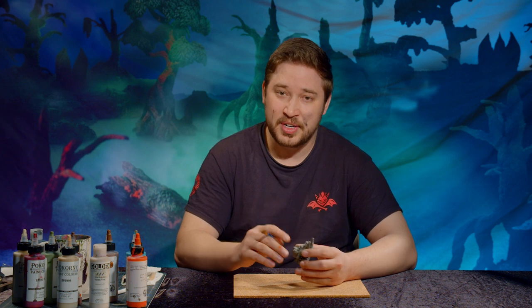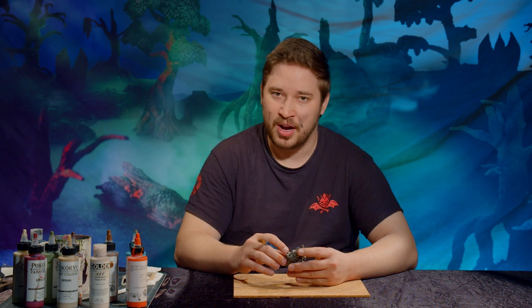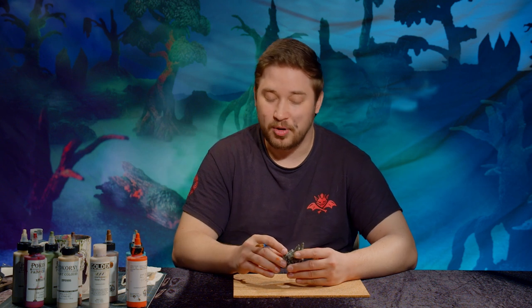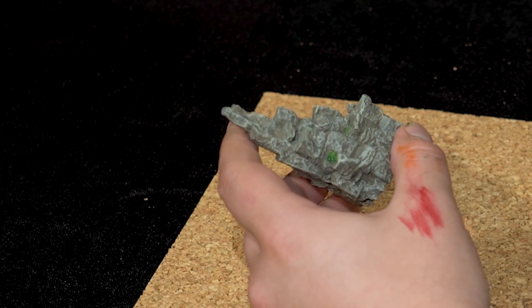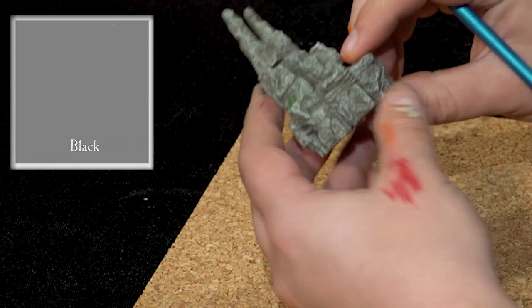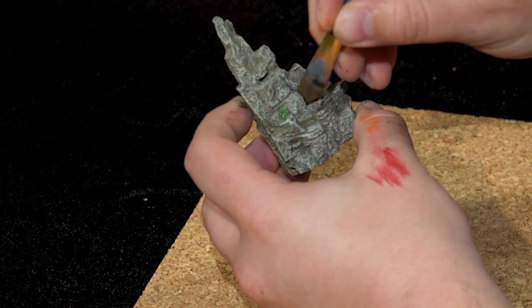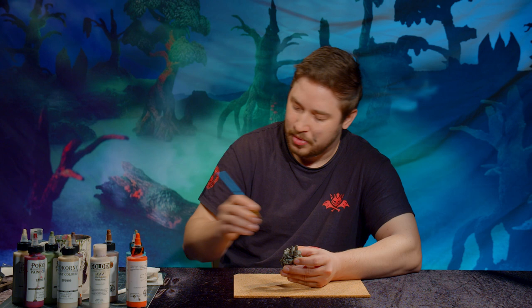So I'm going to selectively pick the recesses with a thinned down paint. Something like black or maybe a brown or whatever you think would be appropriate. So I just have some black paint here. Add some water to it with my brush. Make sure my water is damp.